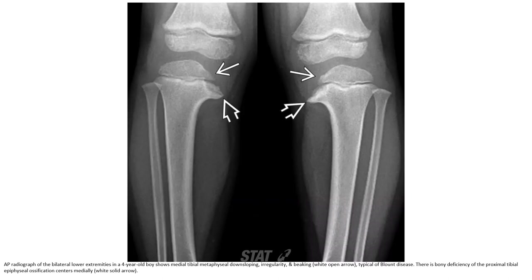AP radiograph of the bilateral lower extremity in a four-year-old boy shows medial tibial metaphyseal down-sloping, irregularity, and beaking, typical of Blount disease. There is bony deficiency of the proximal tibial epiphyseal ossification center medially.